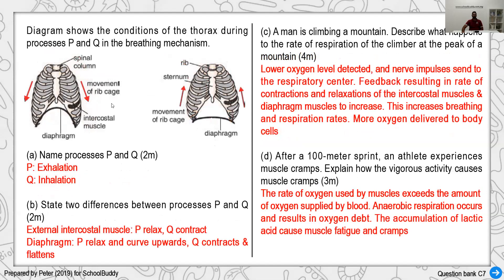Looking at a diagram showing processes P and Q with changes in the diaphragm and rib cage: P shows the diaphragm curved and rib cage moving inward — that is exhalation. Q shows the diaphragm flat and rib cage moving upward — that is inhalation. The difference: in P the external intercostal muscle relaxes; in Q it contracts. For the diaphragm, in P it is relaxed and curved; in Q it is contracted and flattened.